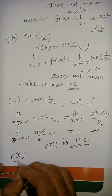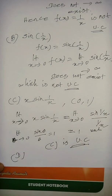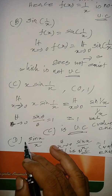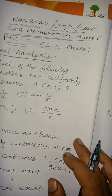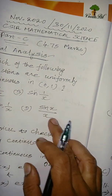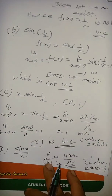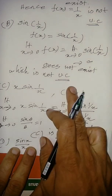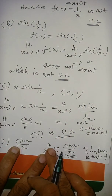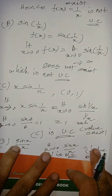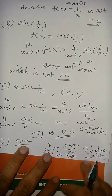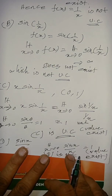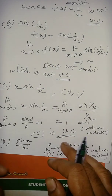Similarly for option D: f(x) = sin(x)/x. Applying the endpoint condition, the limit as x tends to 0 of sin(x)/x equals 1 — a well-known result. The value exists, so sin(x)/x is uniformly continuous on (0,1).